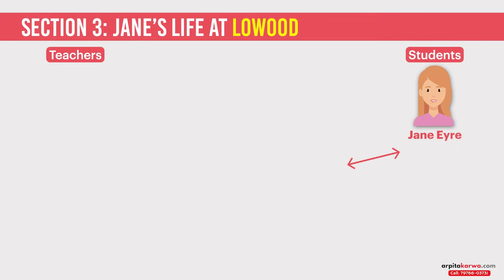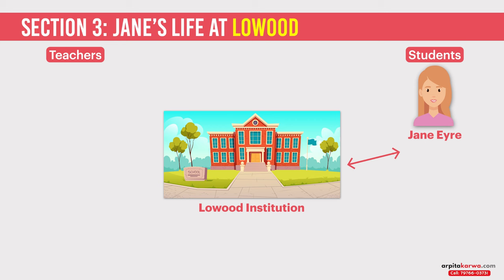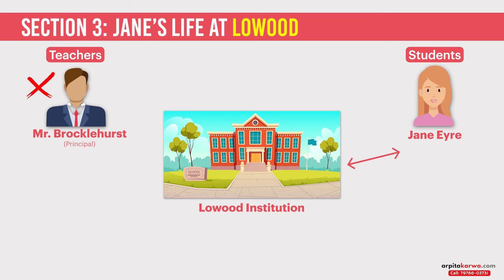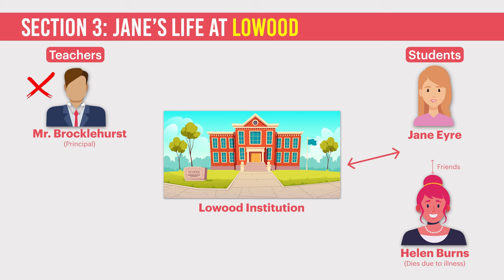Soon after that incident, her aunt sends her to a place called Lowood Institution — a charity school that was run by a bad man named Mr. Brocklehurst. He's a very selfish man and the school principal. He dislikes Jane from the first day of her school. Life at this new school is far from perfect for Jane and she faces many hardships there. On the other hand, there are few people who prove to be her biggest support pillars during her stay at Lowood. One of them is her friend called Helen Burns. Helen is nice to Jane and helps her adjust at Lowood. However, Helen is weak and mostly remains ill, and she soon dies of her illness and constant weakness.